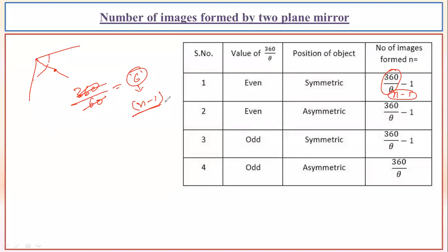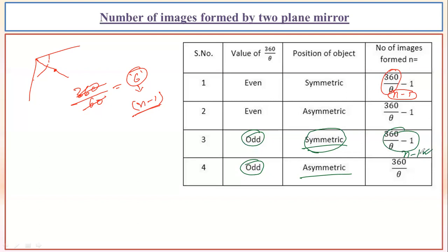Now if the value of n comes as an odd number, then we have to remember: if the object has been placed in the symmetrical condition, the number of images will be counted as n minus one — whatever my value of n is, subtract one, and that is the total number of images.